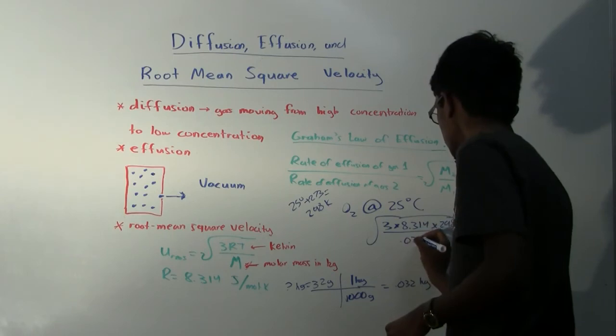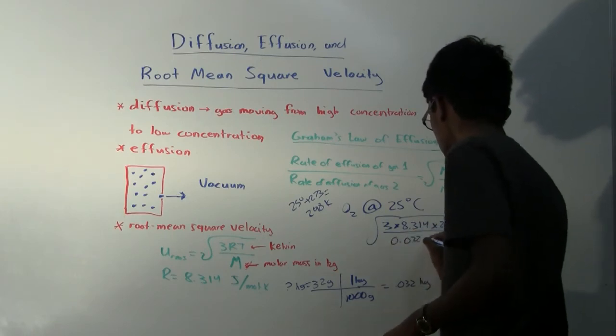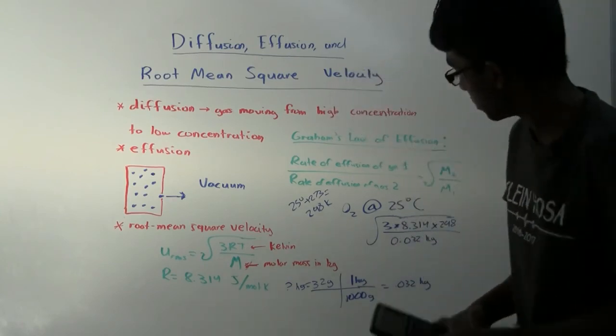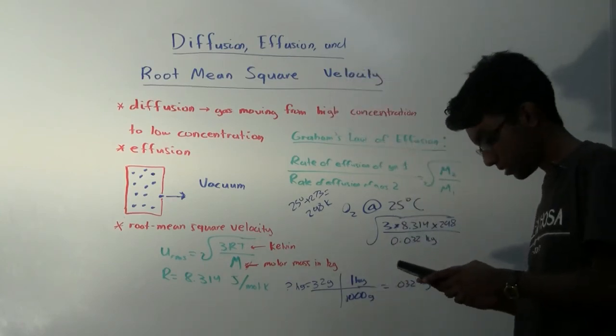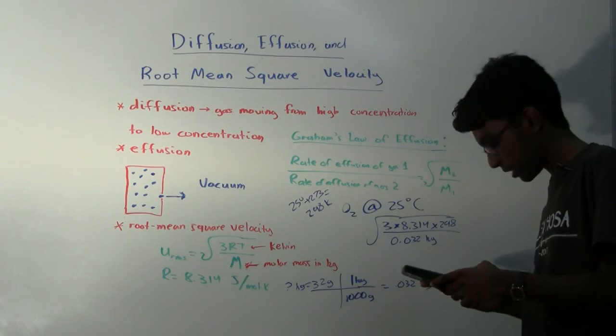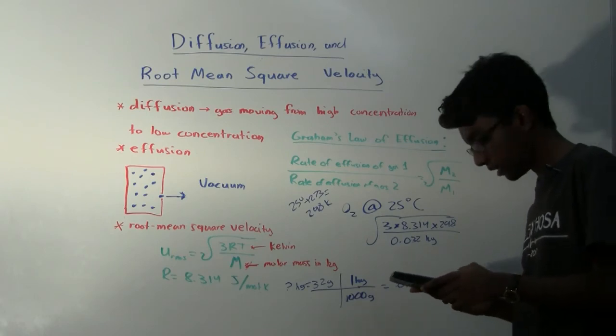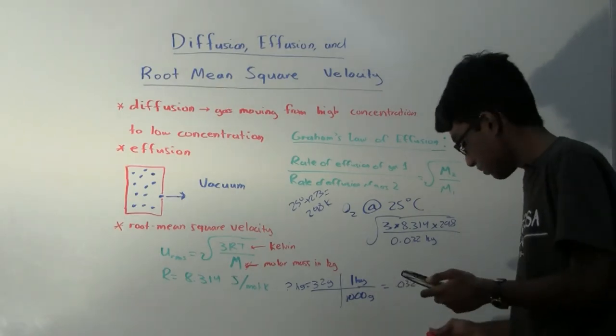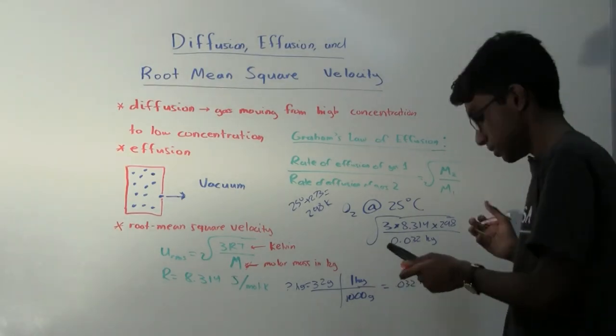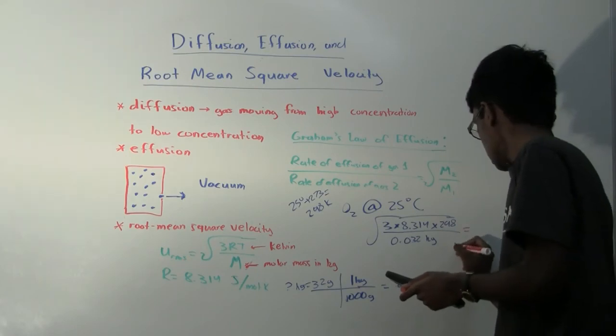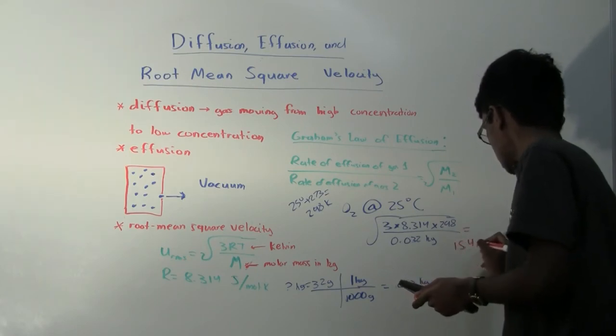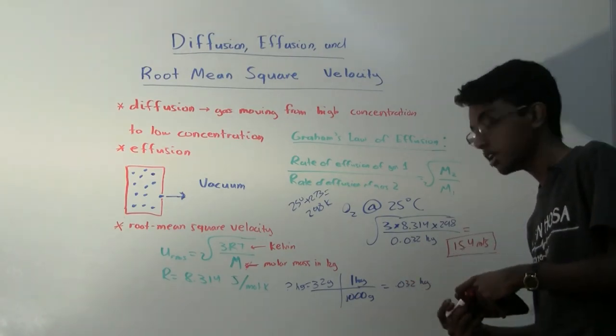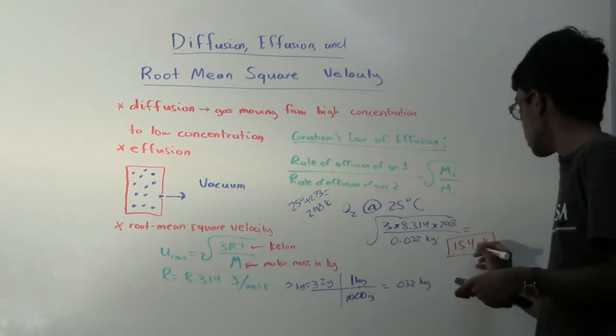So we'll put that here, and then we just solve. We'll quickly do that with my calculator. So 3 times 8.314 times 298 divided by 0.032, the square root of all of that, and that gives us 15.4. So the root mean squared velocity of oxygen at 25 degrees Celsius is 15.4 meters per second.